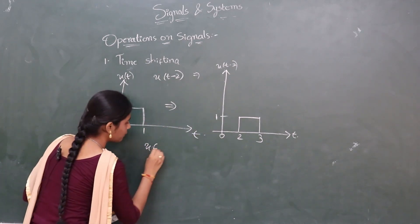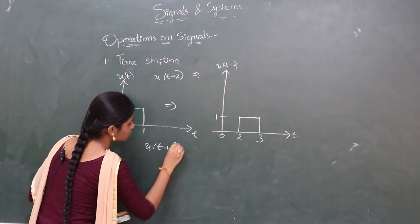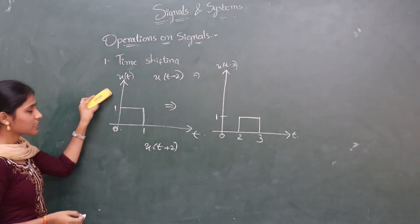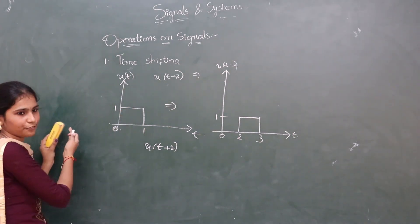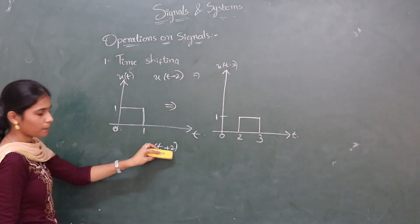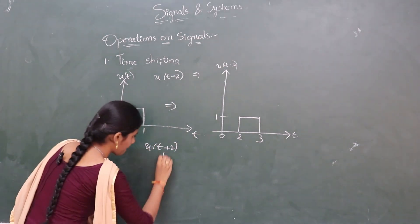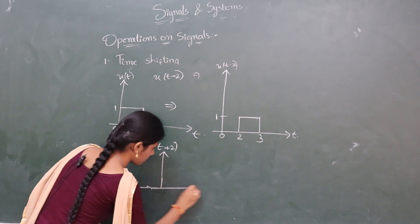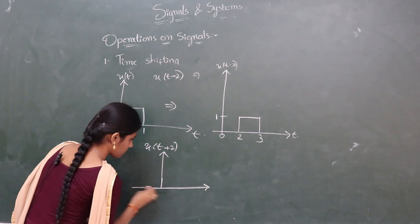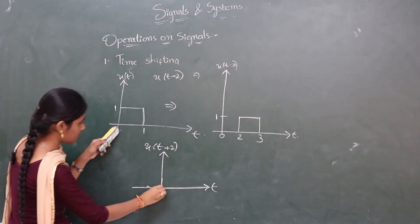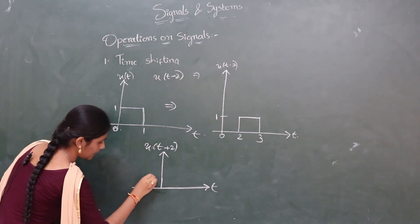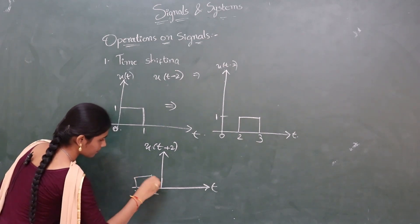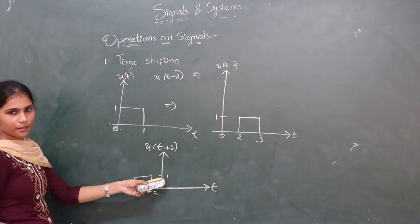Now, x of t plus 2 means the original signal x of t is moving 2 units towards the left, as t0 is negative. The signal was at 0, so moving 2 units left brings it to minus 2. The amplitude remains the same.